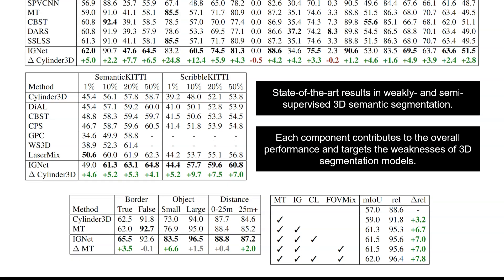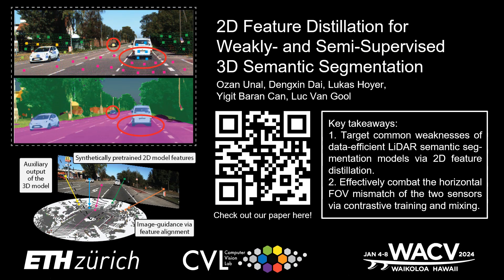To sum up, in this work we tackle the common weaknesses of data-efficient LiDAR semantic segmentation models by leveraging rich and dense 2D image features to guide the training process. To generate such features, we use weakly-supervised, domain-adaptive synthetic training to avoid introducing additional labeling requirements. Finally, we combat the horizontal field-of-view mismatch between the two sensors via contrastive training and data mixing to achieve state-of-the-art results on weakly and semi-supervised settings.